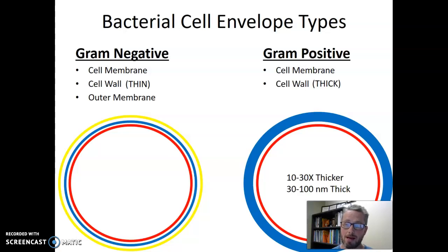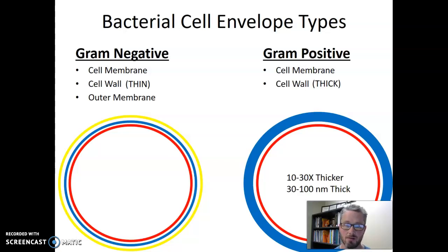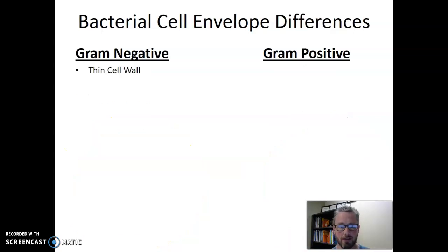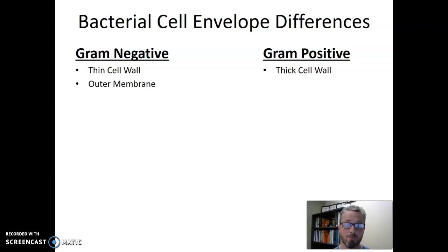When thinking about the bacterial cell envelope, it's critically important to understand what layers exist and what order they're in. Gram-negatives have the outer membrane but a thinner cell wall; gram-positives lack the outer membrane but have a thicker cell wall. Summarizing in a table: gram-negatives have a thin cell wall, gram-positives have a thick cell wall; gram-negatives have an outer membrane, whereas gram-positives have no outer membrane.